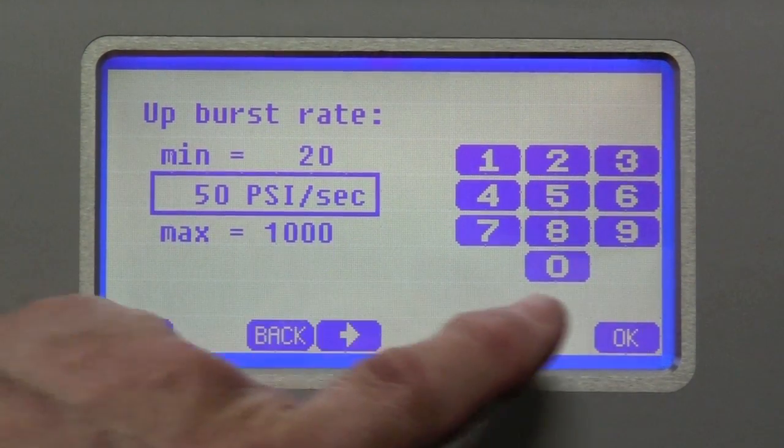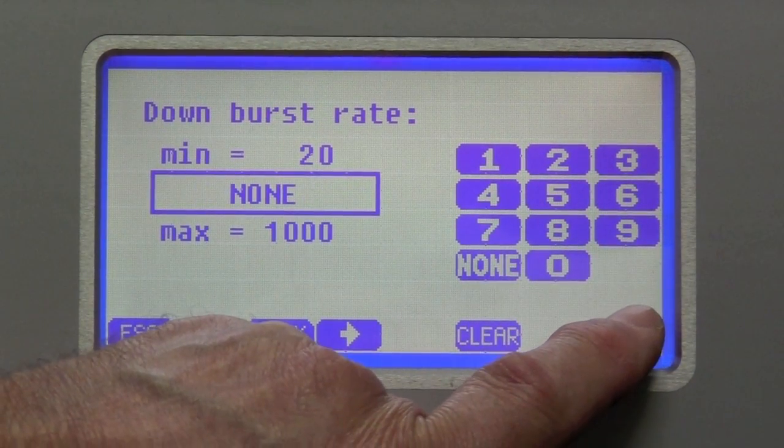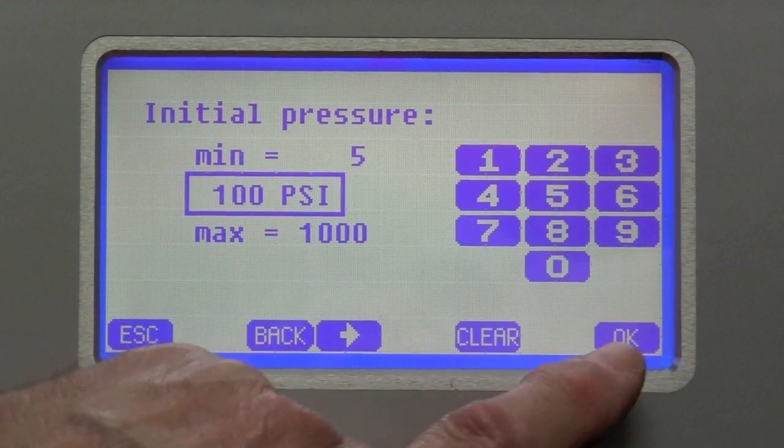The upburst rate defaults to 50. We're going to leave it there because we're not looking for a burst. We don't care. We are not looking for a downburst. So we leave that there.